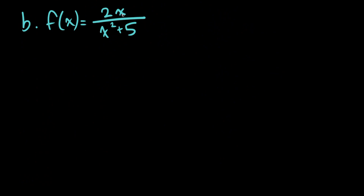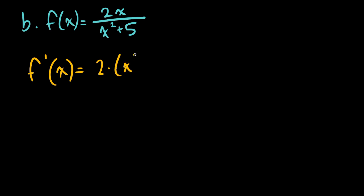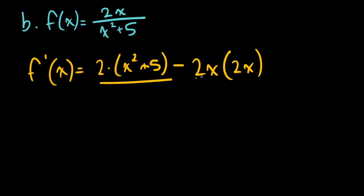For part b, we can use the quotient rule. That would be the derivative of the first function multiplied by the entirety of the second function, minus the first function multiplied by the derivative of the second function, which would just be 2x in this case, all divided by the second function squared.